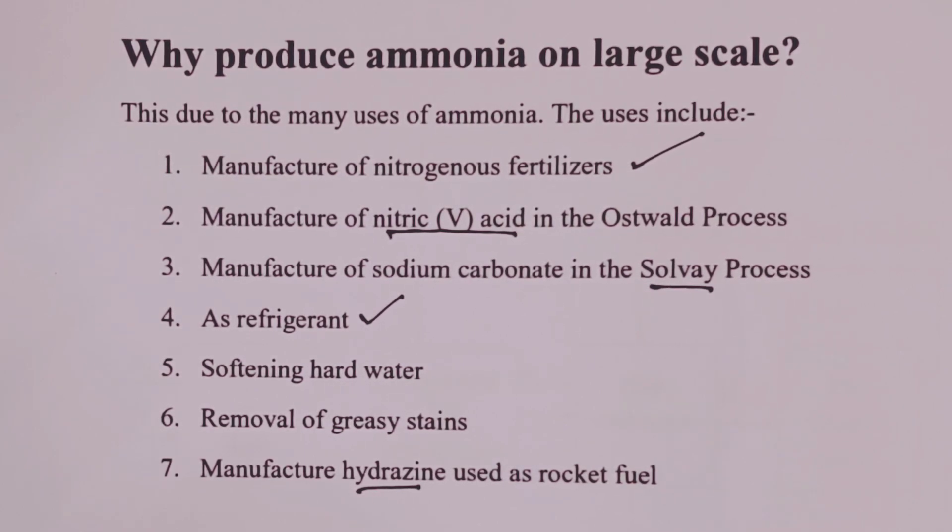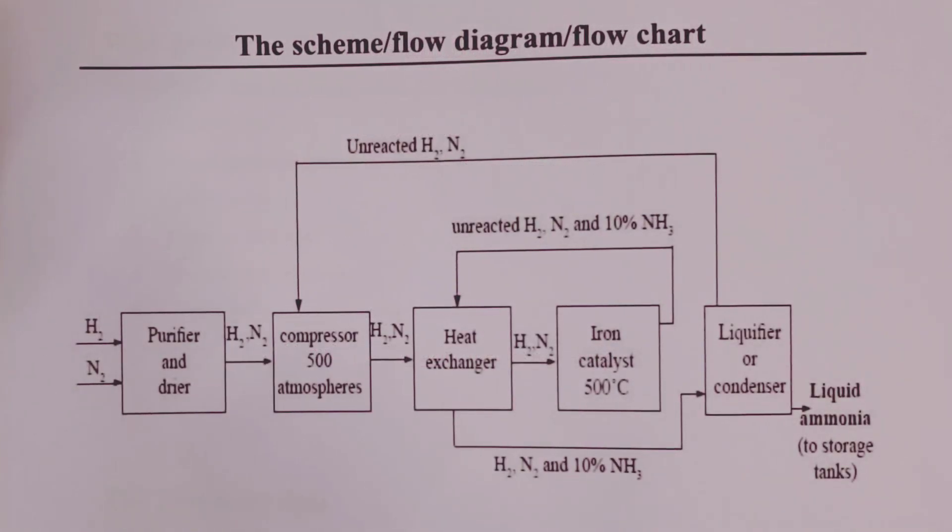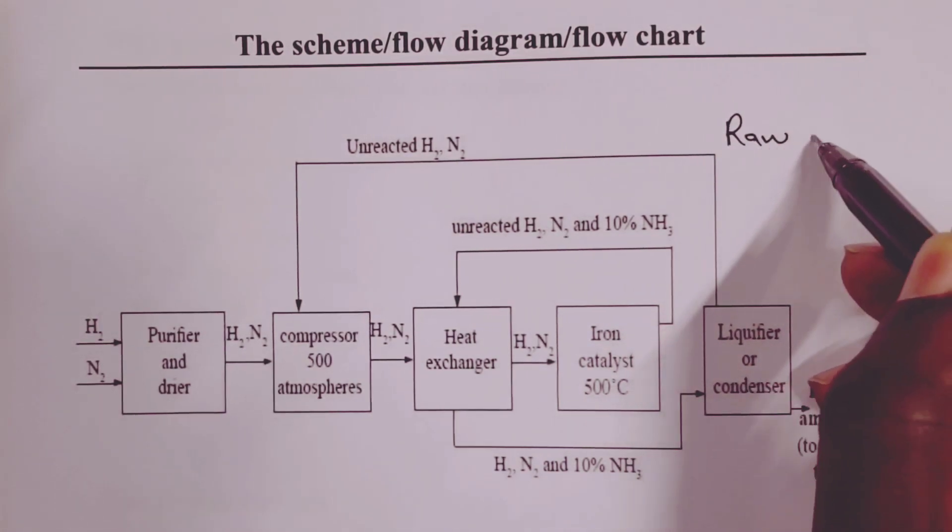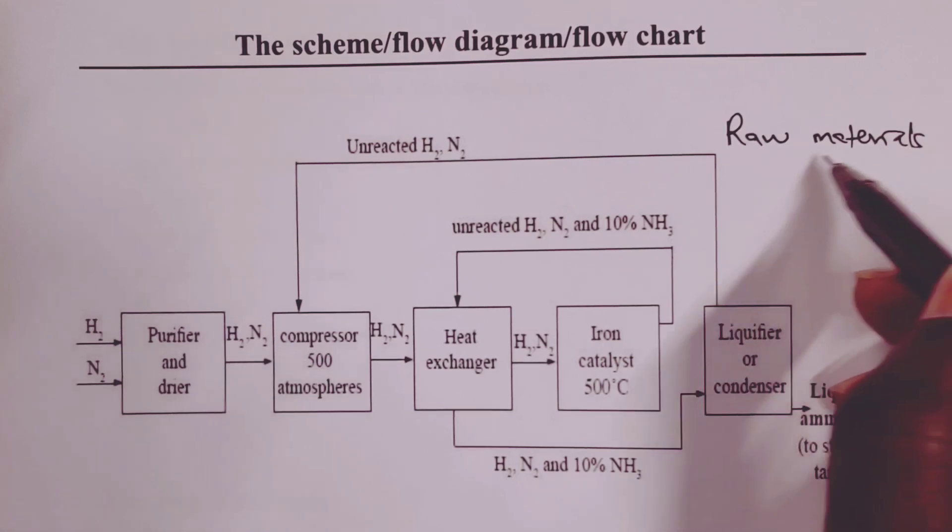Let us proceed now to the scheme for our process and as we go through the scheme we shall discuss the raw materials needed for the process, the conditions of temperature and pressure and we shall also mention the catalyst used for the process. Here is our scheme and without much ado let us begin with mentioning the raw materials that are needed for the process.